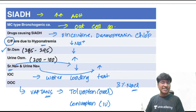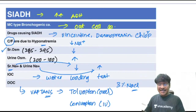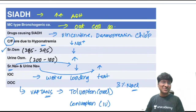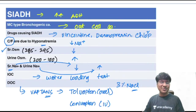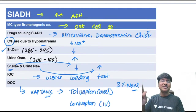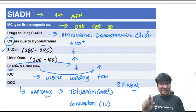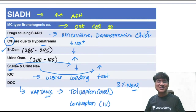Quick recap of SIADH: most common cause is small cell carcinoma; drugs include vincristine/vinca alkaloids; clinical features are due to hyponatremia; serum osmolality reduced; urine osmolality increased; serum sodium reduced; urine sodium increased; investigation of choice is water loading test; drug of choice is Vaptans.